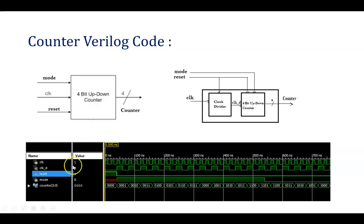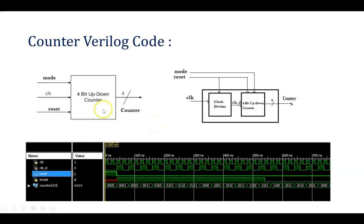You are able to see the waveform where the clock is getting generated. Depending upon the clock divider circuit, it will be generating the divided clock. For 2 clock pulses of the input clock, it is generating 1 clock pulse of clock_D. Reset is 1 for a small amount of time and reset is 0 for a larger amount of time so that it will be performing its counting operation. When reset is 0 it will be counting, and when reset is 1 it will be giving output 0, resetting the circuitry. Your up-down counter is working on this divided clock.